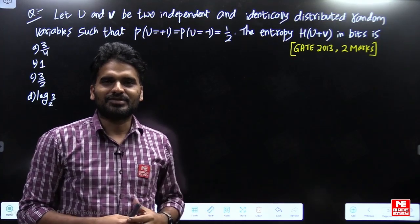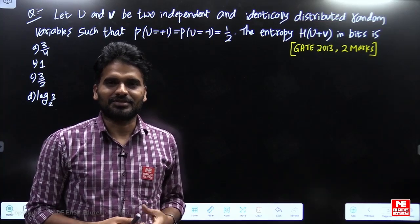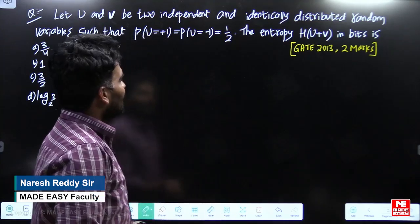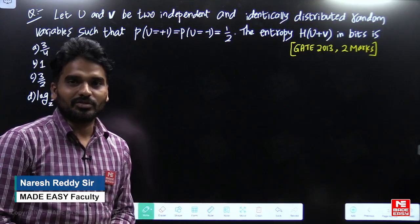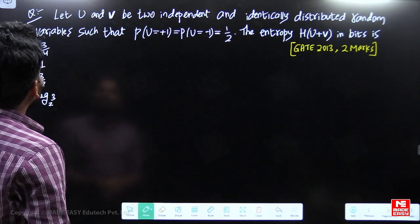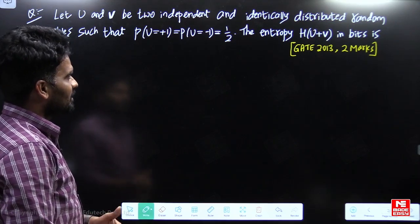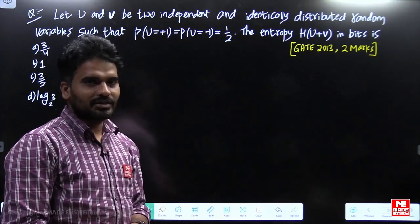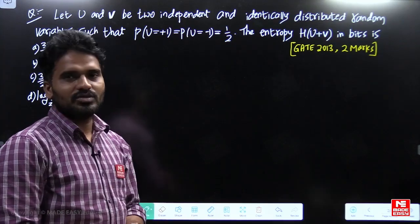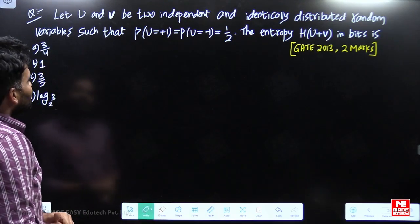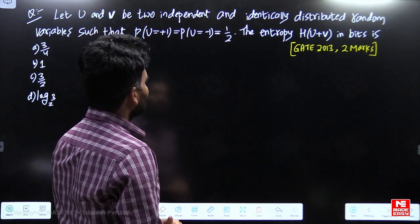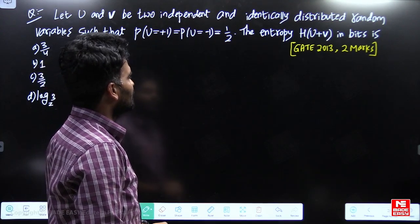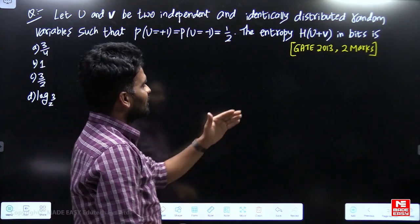Hello students. Here I am going to discuss one of the important communication systems questions from GATE 2013, worth two marks. This question is about finding the entropy of a random variable. Let u and v be two independent and identically distributed random variables such that the probability of u equals +1 and u equals -1 is 1/2 each. We have to find the entropy H(u+v) in bits.